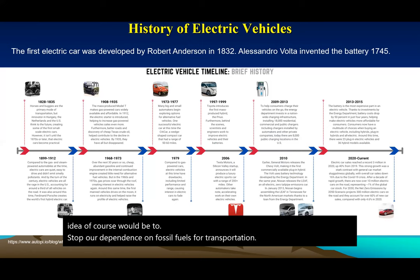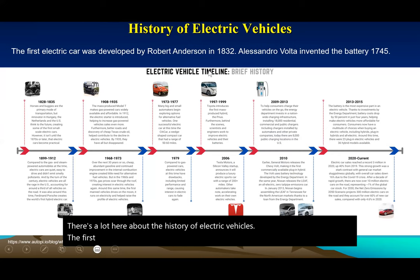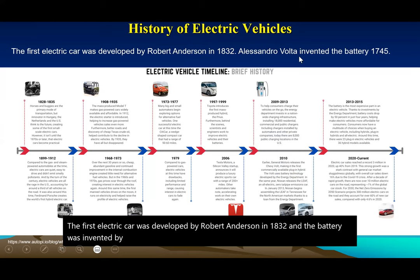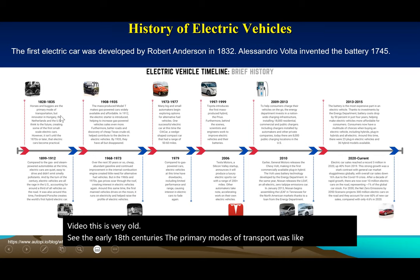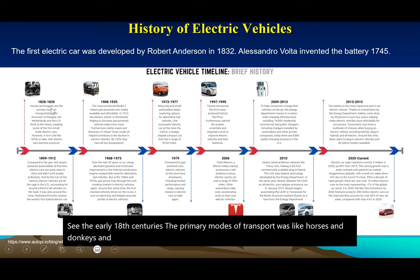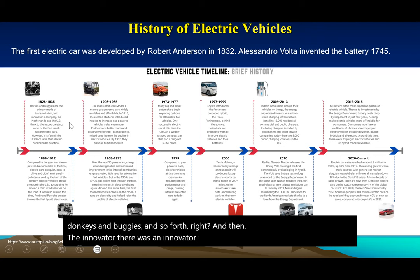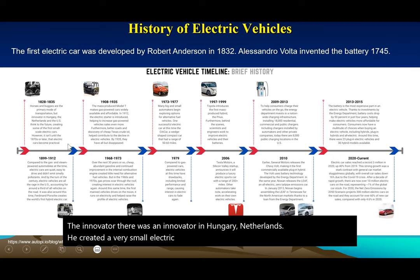There's a lot of history behind electric vehicles. The first electric car was developed by Robert Anderson in 1832, and the battery was invented by Alessandro Volta. This is very old. In the early 18th centuries the primary modes of transport were horses, donkeys, and buggies. An innovator in Hungary and the Netherlands created a very small electric car, and by 1817 electric cars were on the market.